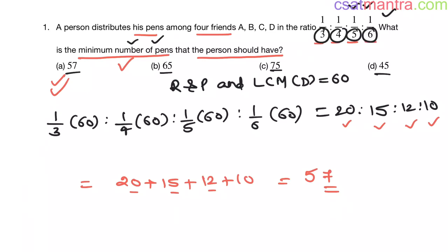Whenever a whole quantity is divided into ratios and you're asked to find the minimum number of that quantity, pens or books, convert these fractions into integers first. See if they can be cancelled, if they can be simplified further, and then add all those quantities.